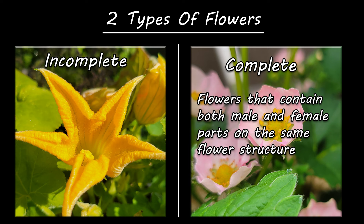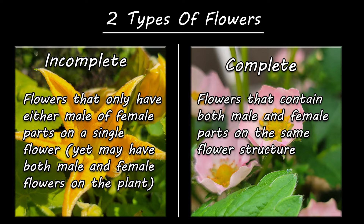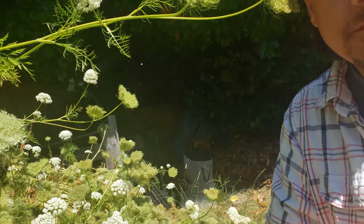Incomplete flowers, on the other hand, as you may have guessed, contain only male or female parts. Now, self-pollination isn't picky — it can happen on both complete and incomplete flowers, but it's not as common as you may think. Take these carrot flowers here — beautiful, complete flowers, but they lack the ability to self-pollinate.